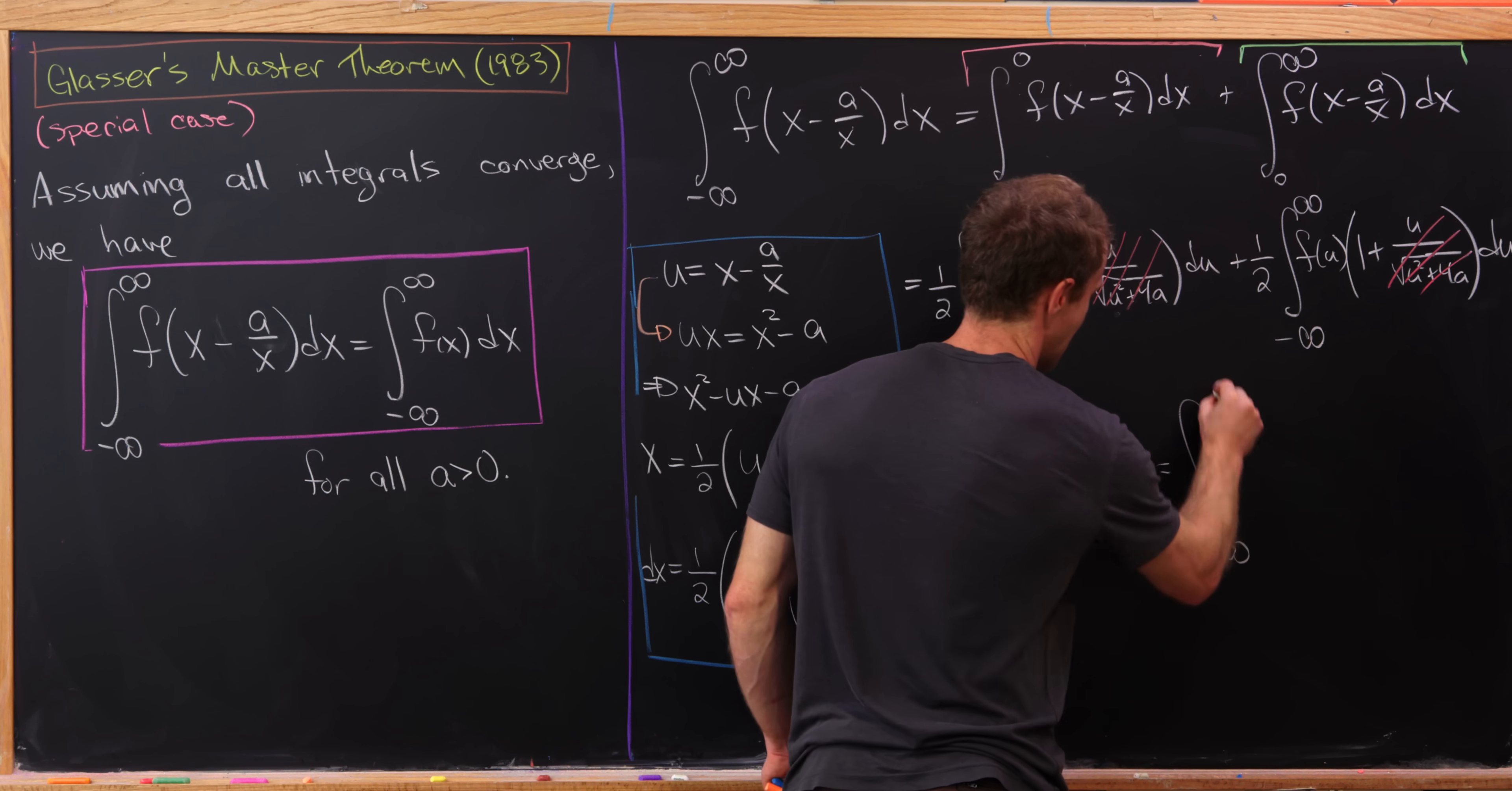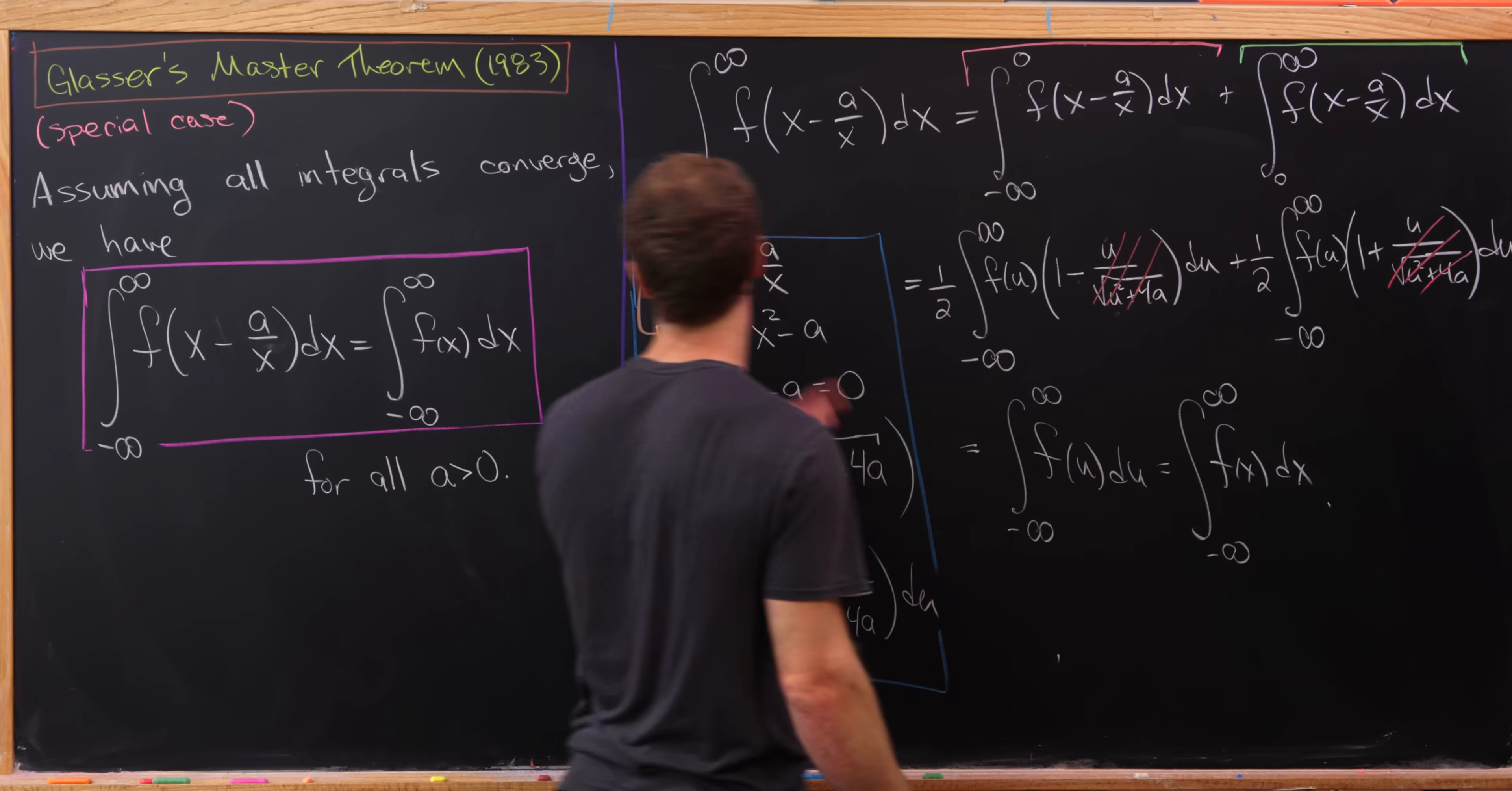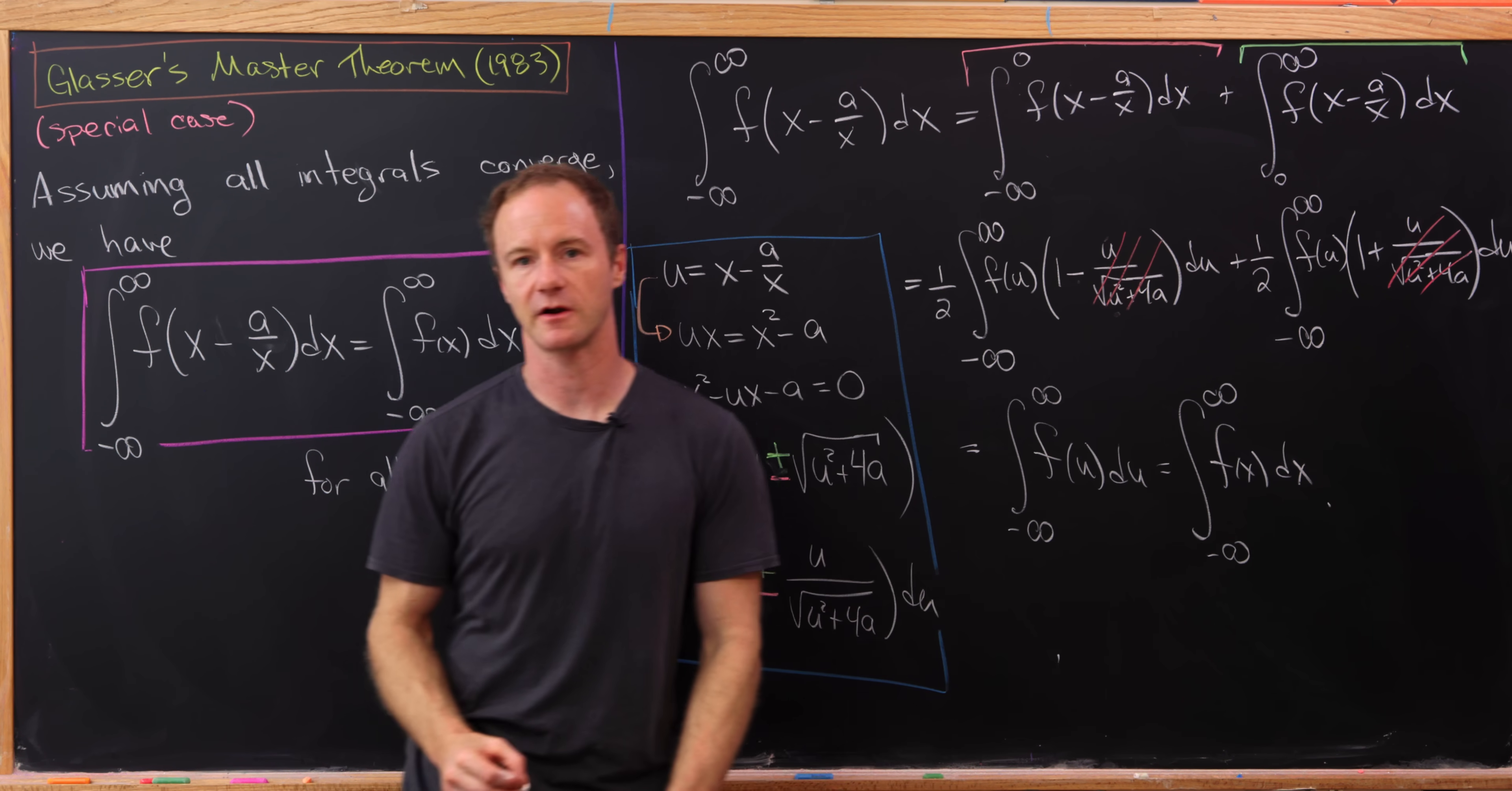But then we could just write that back in terms of x. And we've gone from the left-hand side to the right-hand side of our identity over here.